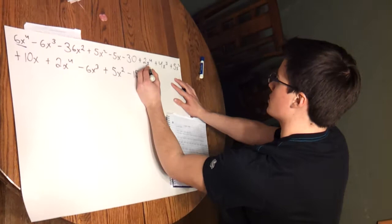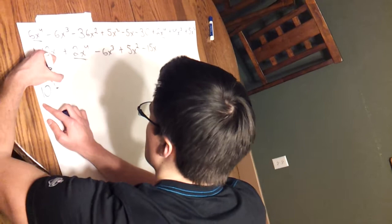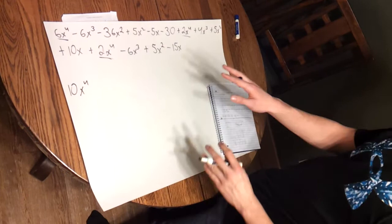So we have 6x to the 4th, 2x to the 4th, and another 2x to the 4th. And that will be add those 3 together and you'll get 10x to the 4th.